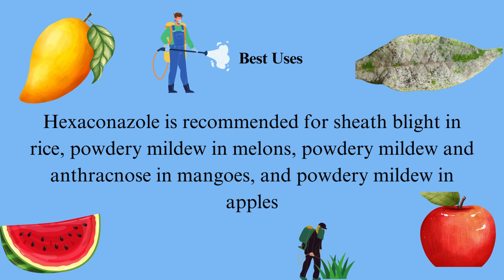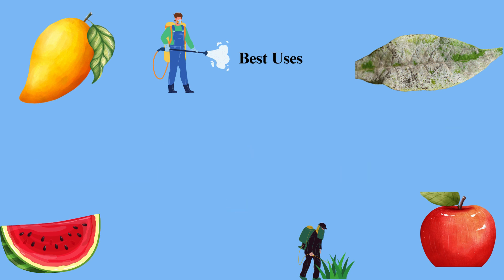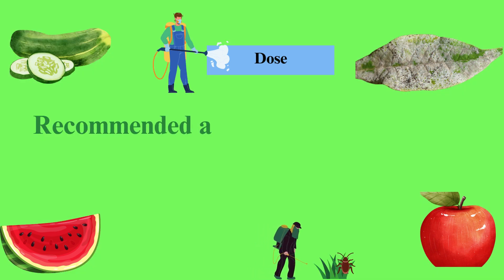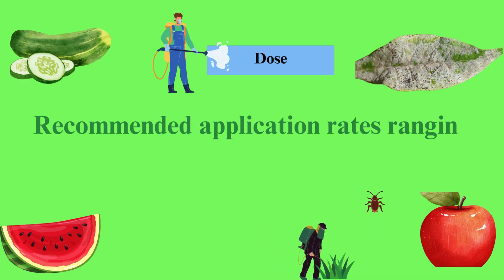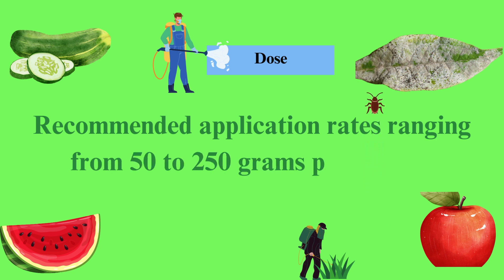Hexaconazole is also recommended for powdery mildew in apples. The recommended dosage varies depending on the target disease, crop, and stage of infection. Typically, hexaconazole is applied at rates ranging from 50 to 250 grams per hectare, with specific application guidelines provided by manufacturers and agricultural experts.